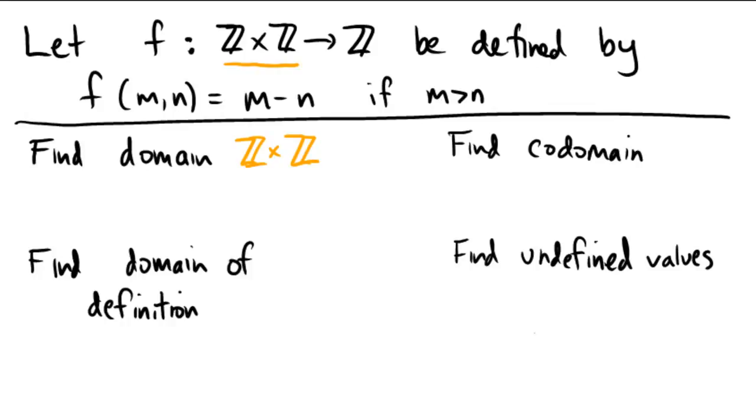The codomain is the part on the right. It's what we're being sent to. So the codomain is just going to be Z. The domain is Z×Z and the codomain is just Z.